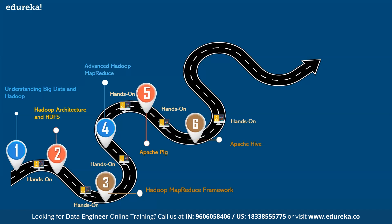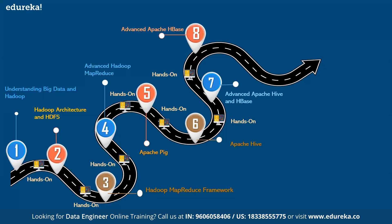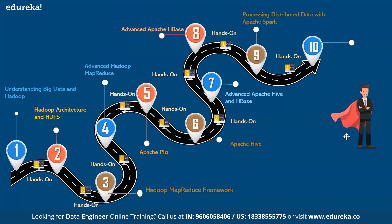In the seventh class you'll learn about Apache Hive and HBase at an advanced level. In the eighth class, you'll learn about advanced Apache HBase and its different components and integrations. The ninth class covers processing distributed data with Apache Spark — different ways to process data and how to integrate it. In the tenth class, you'll learn about Oozie and a Hadoop project — how to create different integrations — all with practical hands-on.